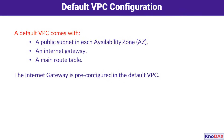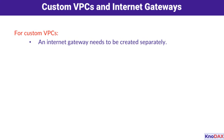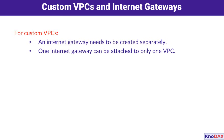However, when you create custom VPCs, these components need to be set up manually. For custom VPCs, an Internet Gateway must be created and attached separately. This is because only one Internet Gateway can be attached to a VPC at a time. This one-to-one relationship ensures logical isolation and efficient routing for each VPC.